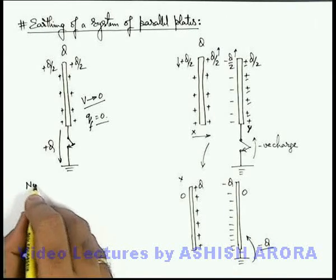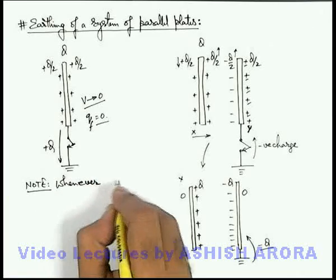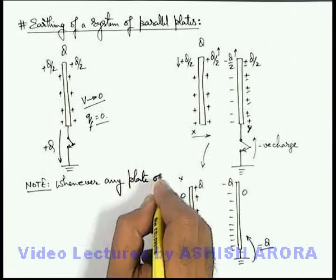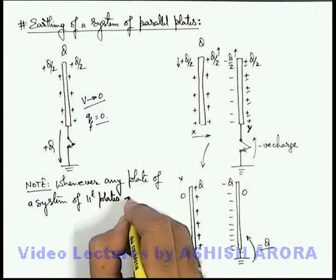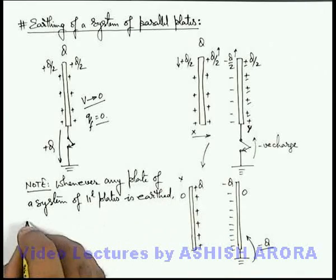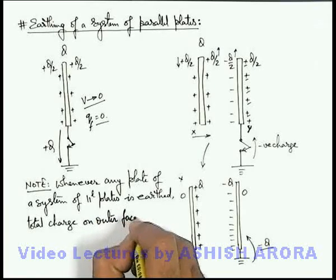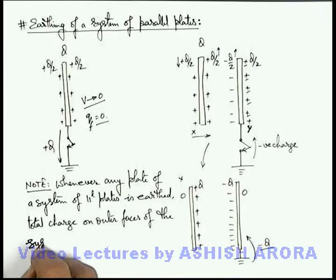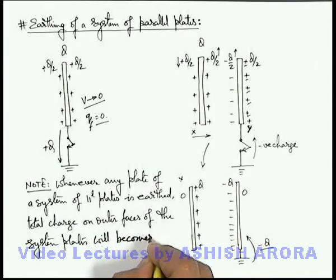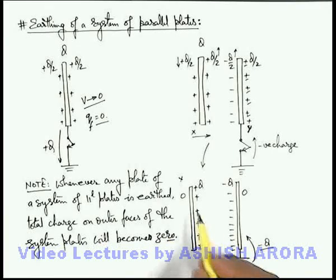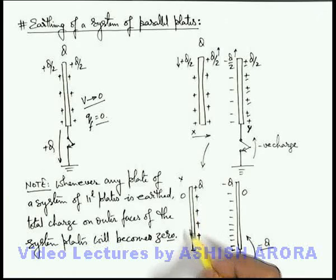We can analyze this and write down a note for earthing of a system of plates: whenever any plate of a system of parallel plates is earthed, the total charge on the outer faces will become zero. And correspondingly we can easily calculate what the charge on the inner faces will be — that will depend on the charge which is already there on the plates which are not connected to earth, as we have discussed in this situation.